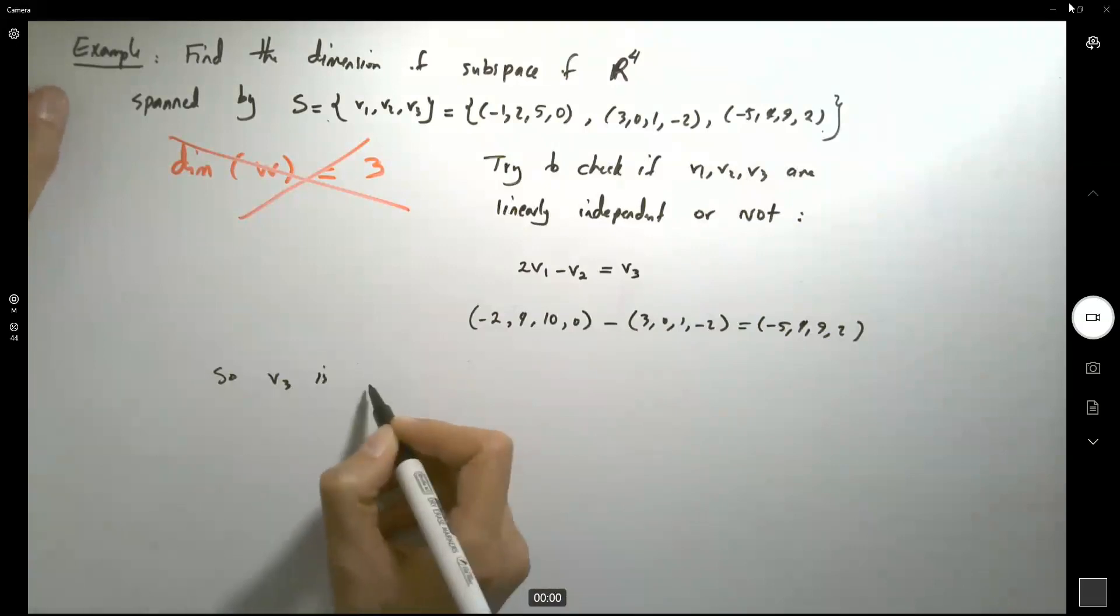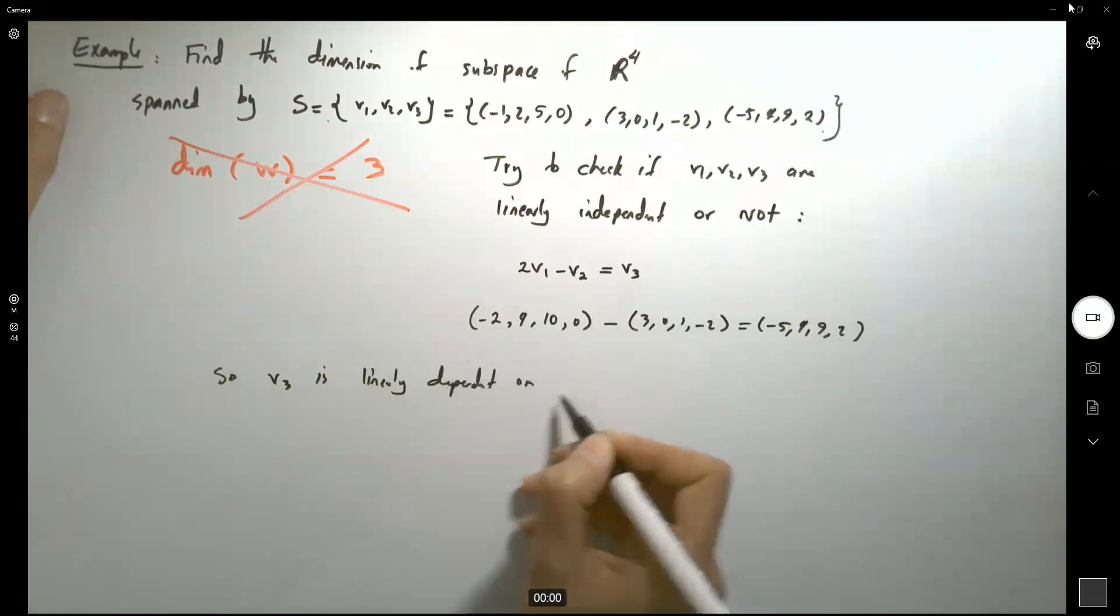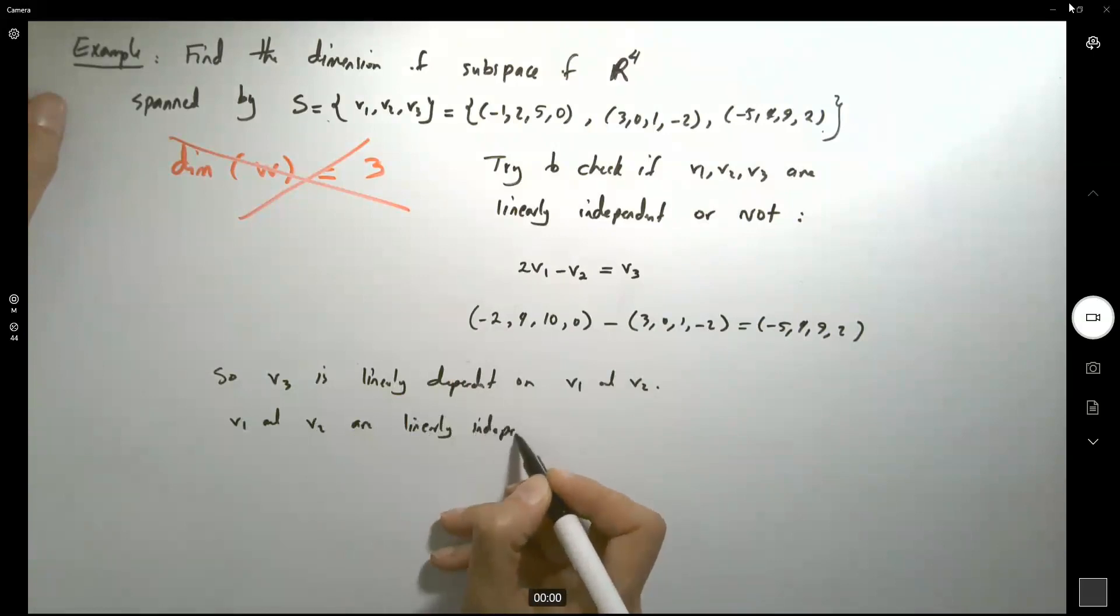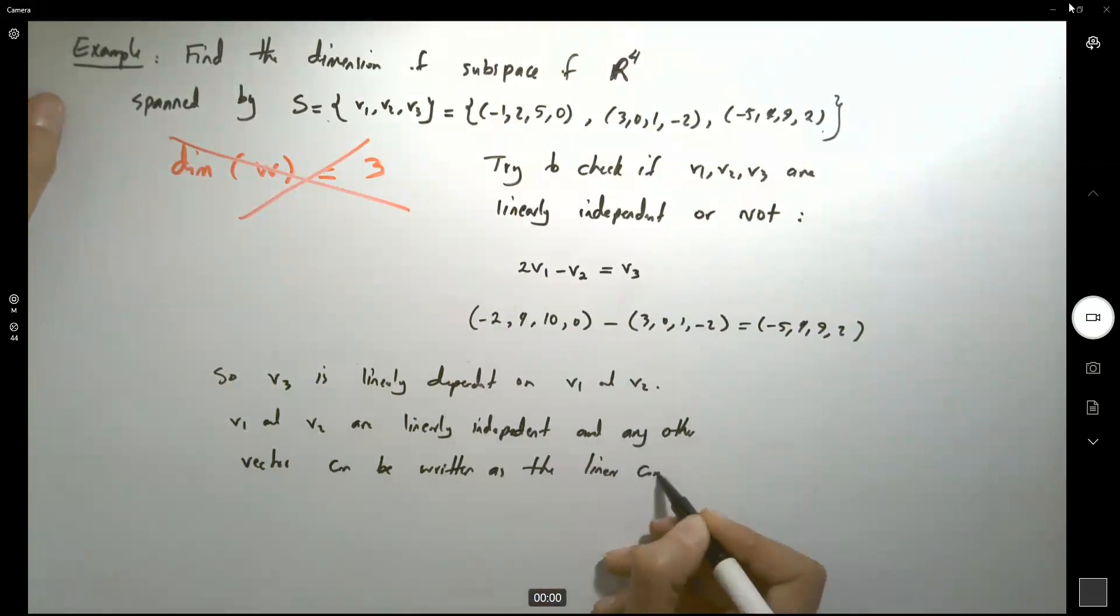So v3 is linearly dependent on v1 and v2. v1 and v2 are linearly independent, and any other vector can be written as the linear combination of v1 and v2.